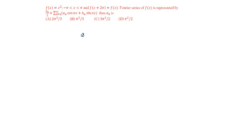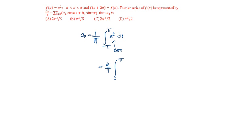A₀ will be equal to 1 by pi, integral minus pi to pi of the given function x squared dx. Since this is an even function, this can be written as 2 by pi, integral 0 to pi, x squared dx.